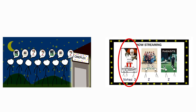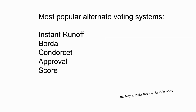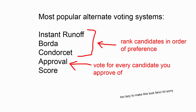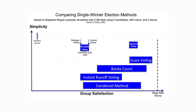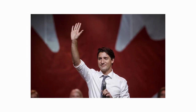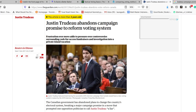First Past the Post is based on voting for favorites, then maximizing the amount of voters who get their first choice. There are many alternate systems, and they are based on not just voting for your first choice, but voting for every candidate you approve of or ranking all the candidates in order of preference. A mathematician ran computer simulations with two million trials across the six most popular voting systems, and the graph shows how well each maximizes group satisfaction. First Past the Post came in dead last. When he was running for prime minister, Justin Trudeau said he would change Canada's voting system from First Past the Post. Guess who didn't keep his campaign promise?